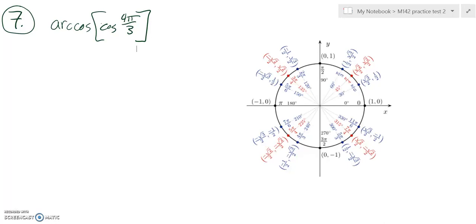This is math 142, practice test number 2. We're supposed to find the arc cosine of the cosine of 4 pi over 3.